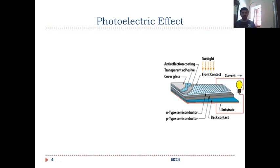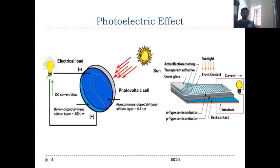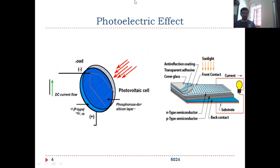What we are going to get out of this is direct current. If you want to convert that into alternating current, you may have to employ an inverter. This simply happens whenever light strikes on a photovoltaic cell. For example, phosphorous-doped n-type silicon layer, p-type and n-type: n-type is phosphorous-doped and the p-type is boron-doped, so there will be DC current flow.